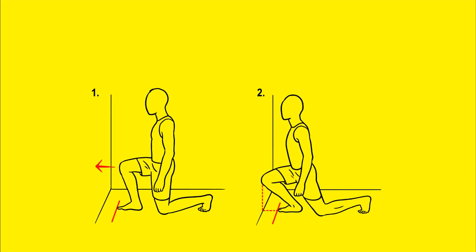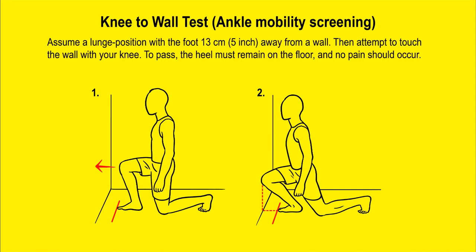A very common test used in rehabilitation and strength training to determine adequate ankle mobility is the knee-to-wall test. Assume a lunge position with the foot five inches (13 centimeters) away from a wall, keep your heels down on the ground, and try to touch the wall with your knees without letting the heels rise. If the heels rise or pain occurs, you have failed the test and have mobility work to do. If you can do this test, you generally have no ankle mobility restrictions for ass-to-grass back squats.